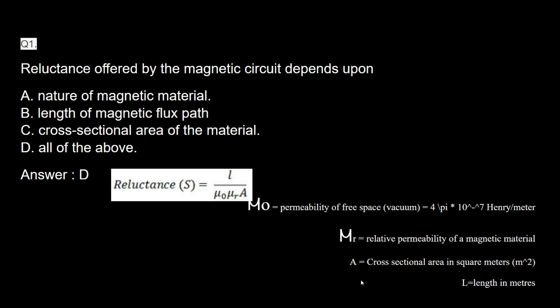The reluctance formula is L divided by (μ0 × μR × A), where L is the length of the magnetic material, A is the cross-sectional area in square meters, μ0 is the permeability of free space equal to 4π × 10⁻⁷ Henry per meter, and μR is the relative permeability of the magnetic material. Reluctance is directly proportional to L and inversely proportional to A, and it also depends on the nature of the magnetic material. So options A, B, and C are all correct, making option D — all of the above — the correct answer.